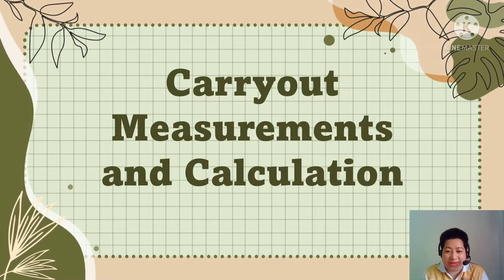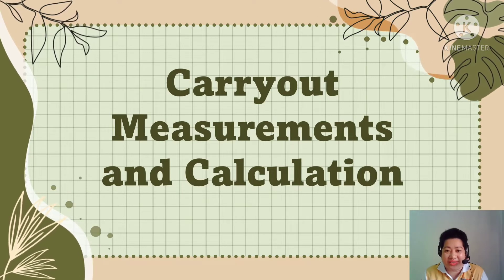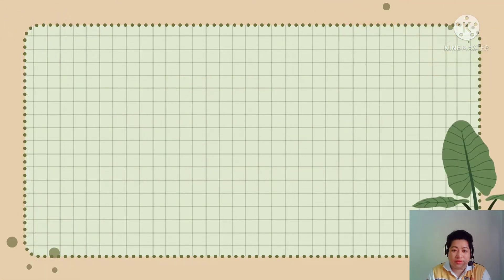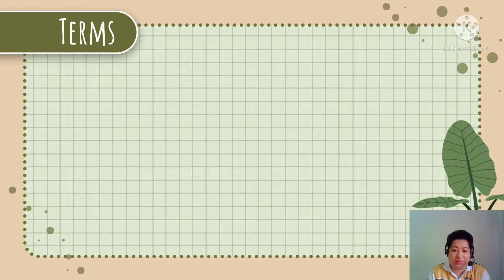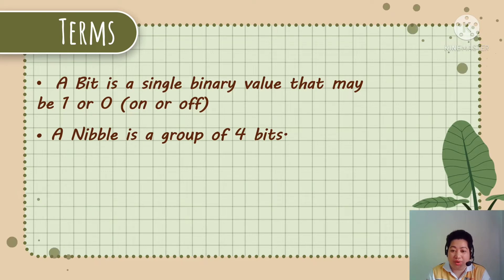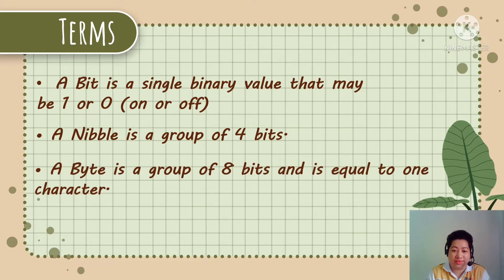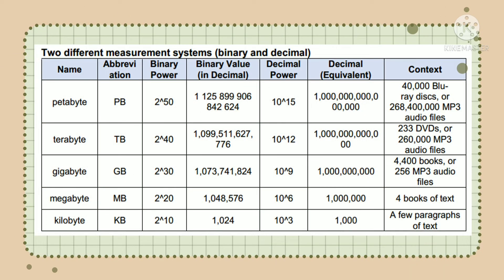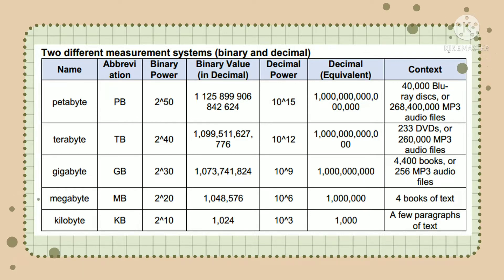Let us proceed with measurements and calculations. Here are some of the terms that we use. A bit is a single binary value that may be 1 or 0. A nibble is a group of 4 bits. And a byte is a group of 8 bits, and it is equal to 1 character. This table shows the measurement units in computer memory and its equivalent binary, decimal, and context.